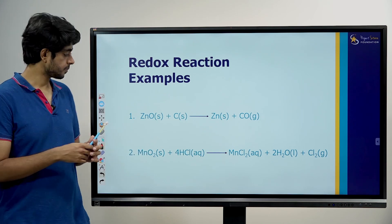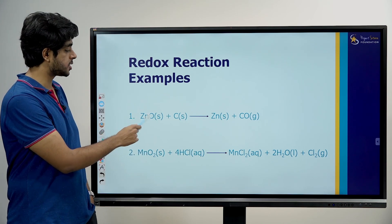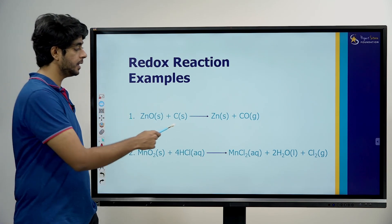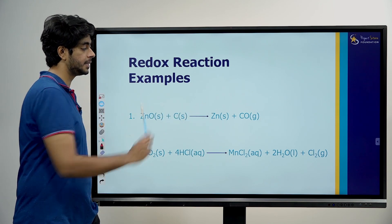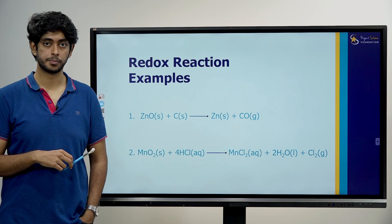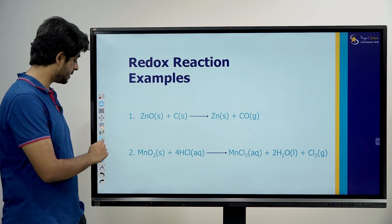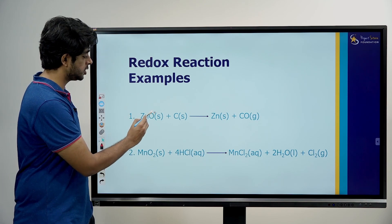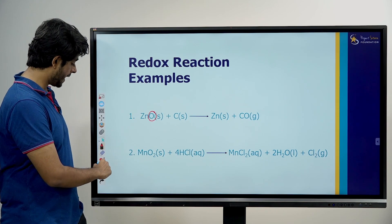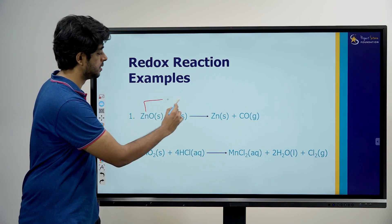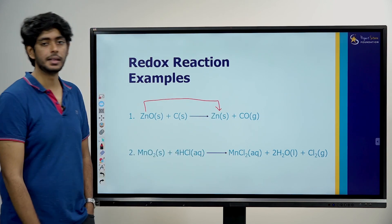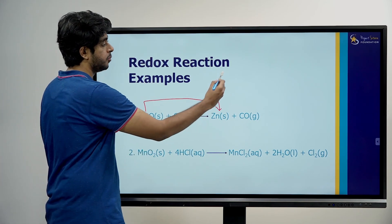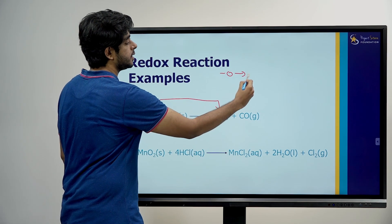For example: zinc oxide reacted with carbon monoxide gas. Zinc oxide had oxygen associated with it. The oxygen was removed from manganese — oxygen was removed from zinc. The removal of oxygen — what do I call it? Reduction. So here zinc is being reduced.